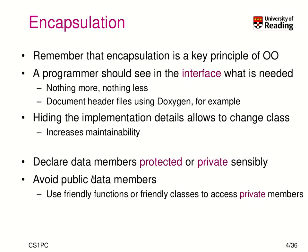How can we actually implement this? We have to declare data members protected or private sensibly and avoid any public data members except when they are absolutely needed. There are friendly functions and friendly classes that can access private members selectively. That means we first forbid everyone from access and then enable selected methods or classes to access our private members as needed.